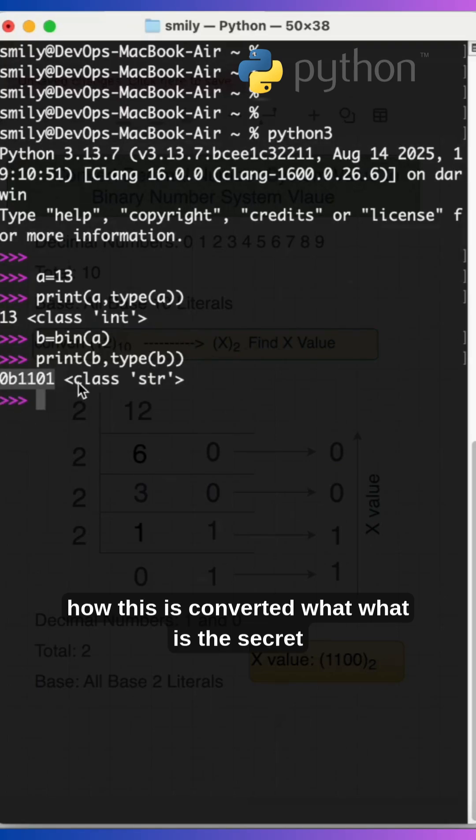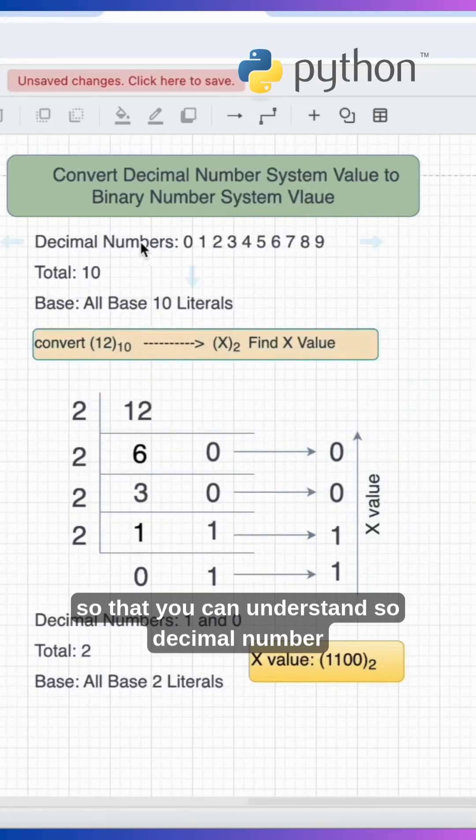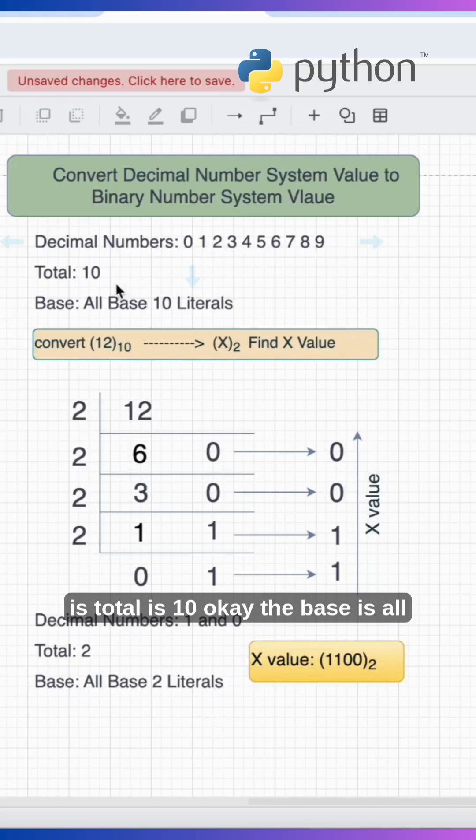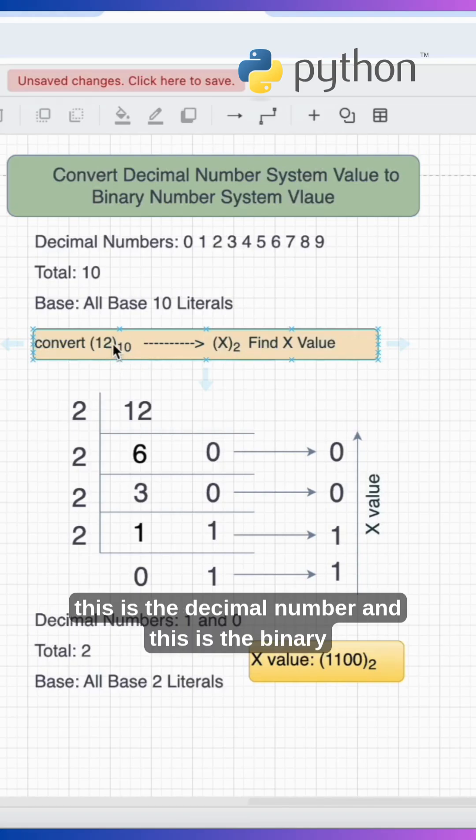How is this converted? What is the secret behind this and what internal steps are followed by the computer? You can clearly observe this diagram to understand. Decimal number system uses decimals 0 to 9, total is 10. The base is all base 10 literals called decimal numbers. Convert 12 base 10 - that is, find the X value.